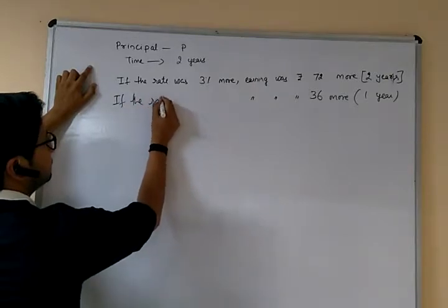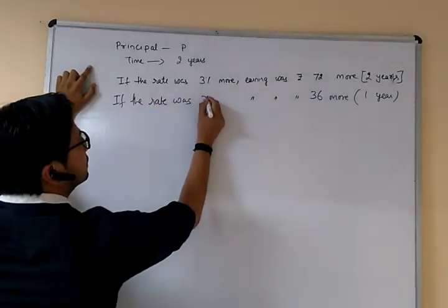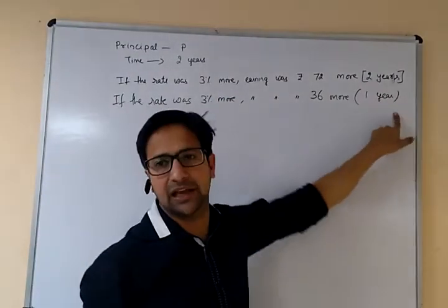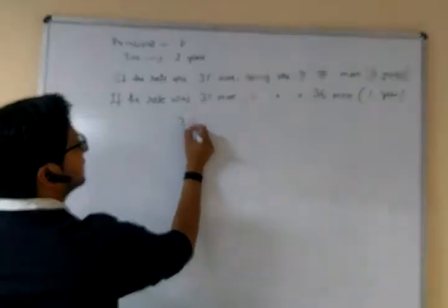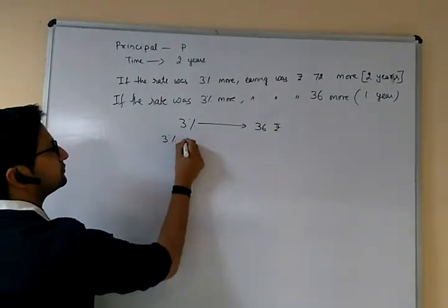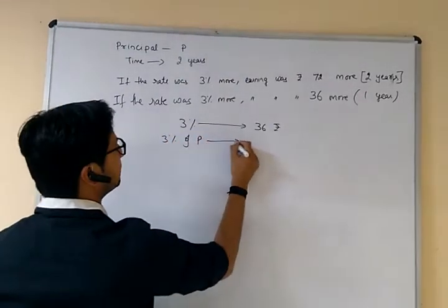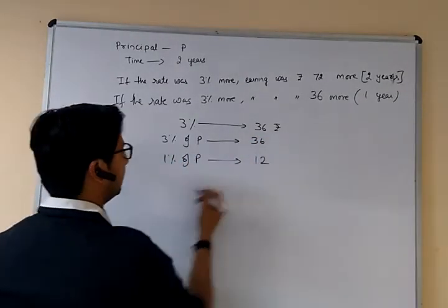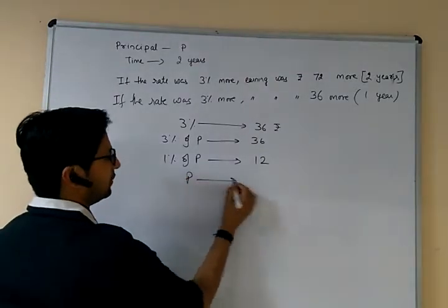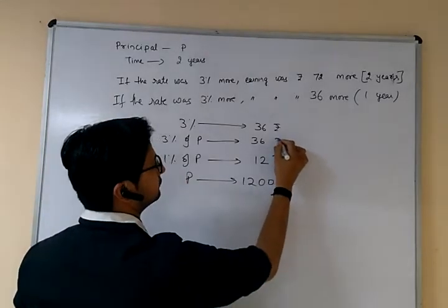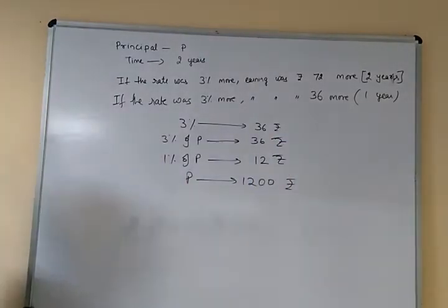For 1 year, 3 percent more gives 36 rupees. So 3 percent of principal equals 36. Therefore 1 percent of principal equals 12, and the principal is 1200 rupees.